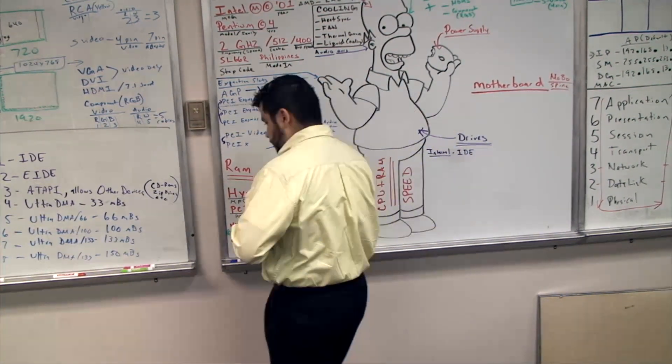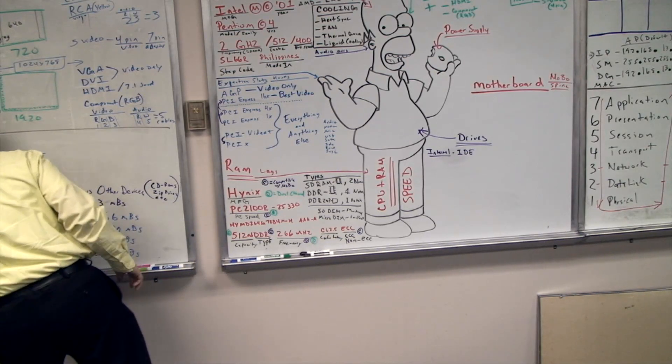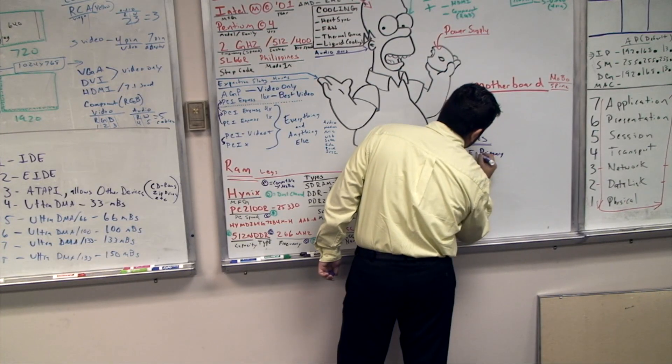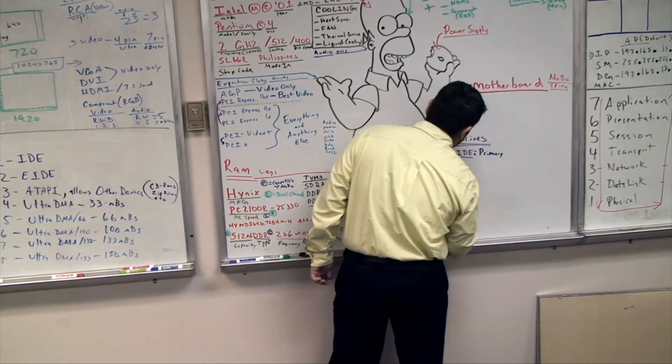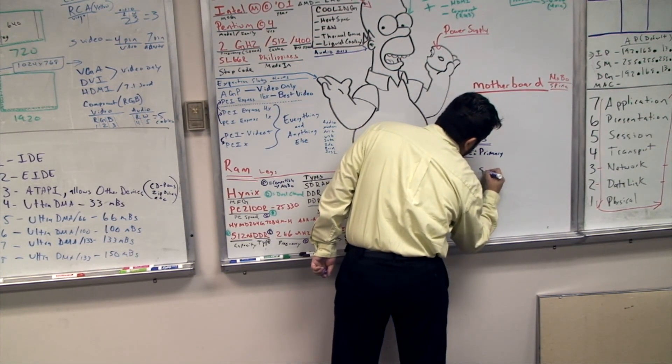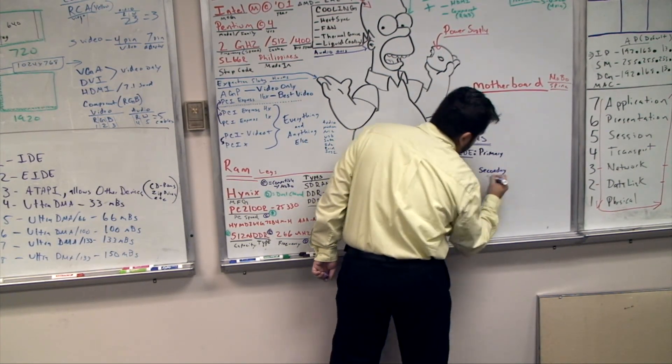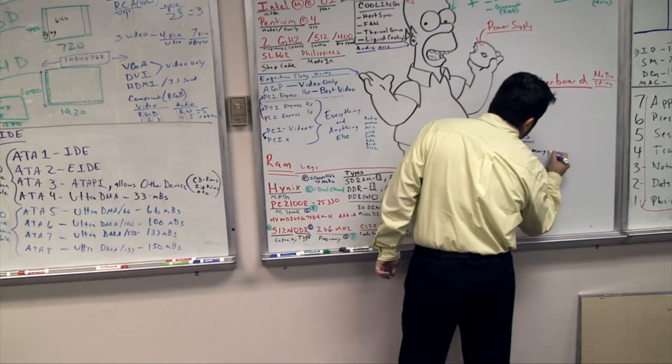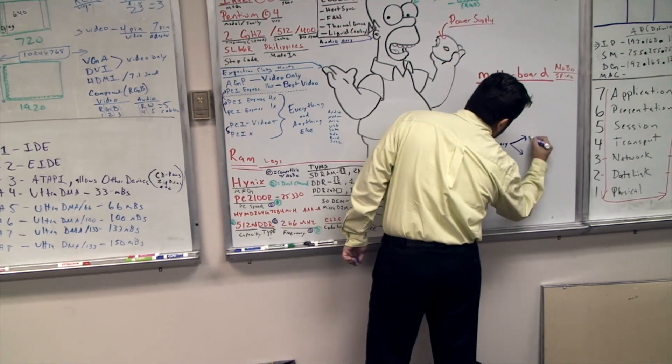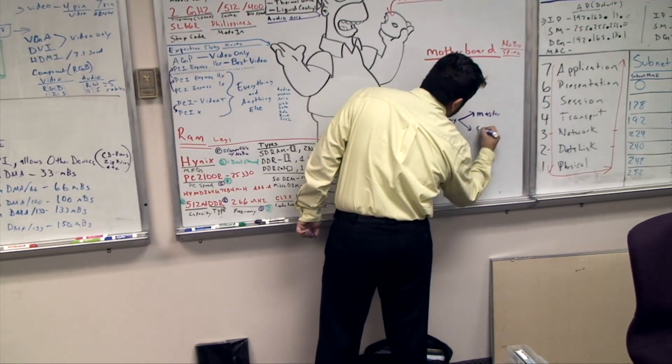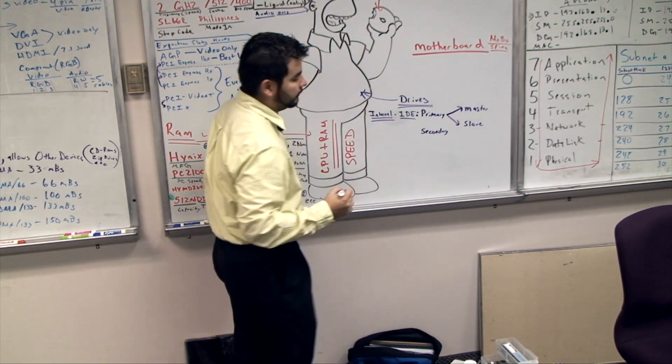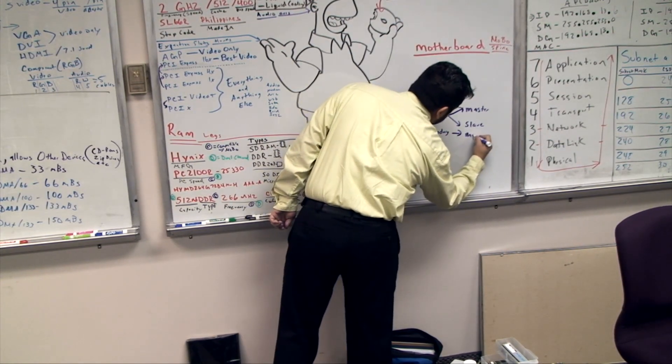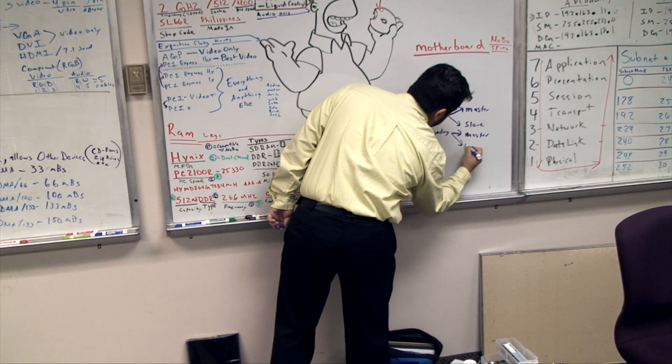So for IDE, I have a primary connection and then I have a secondary connection. I have one and two, right, on my motherboard. The primary can have a master and a slave. Two connections and the secondary can have a master and a slave.